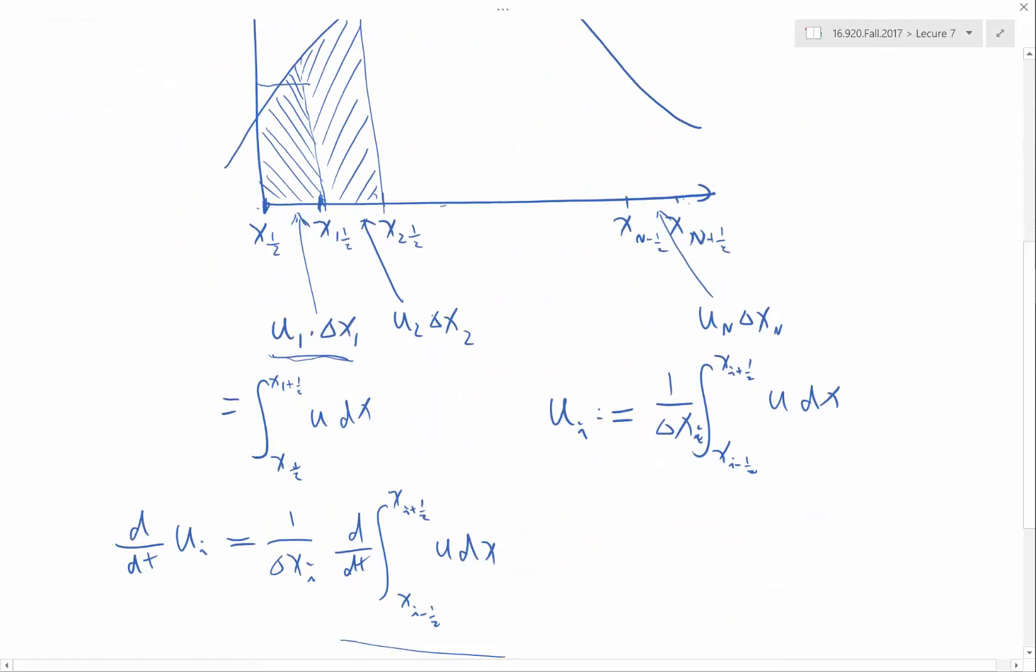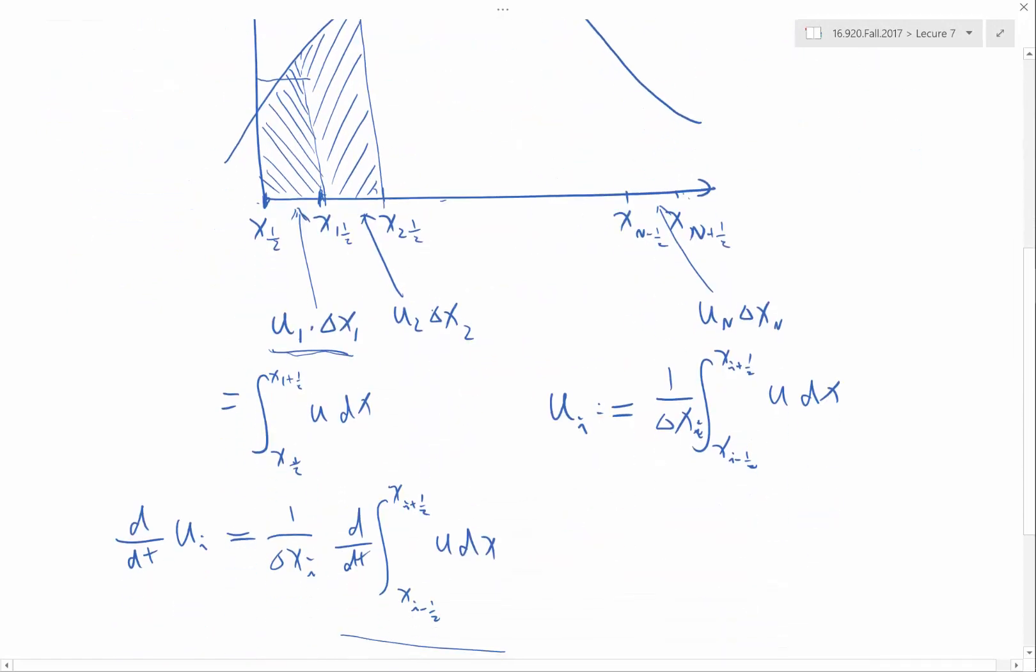I just choose a equal to the lower bound and b equal to the upper bound, and this is going to be equal to f(u) at the lower bound, which is the influx, minus f(u) at the upper bound, which is the outflux.